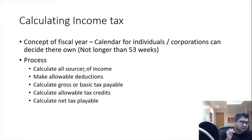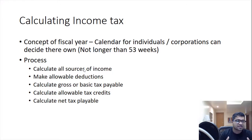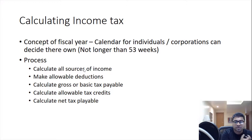To summarize the five steps: estimate income from all sources, take allowable deductions to reduce income, calculate tax payable based on your tax slab — because Canada has progressive taxation — then calculate allowable tax credits, and then pay the net tax.